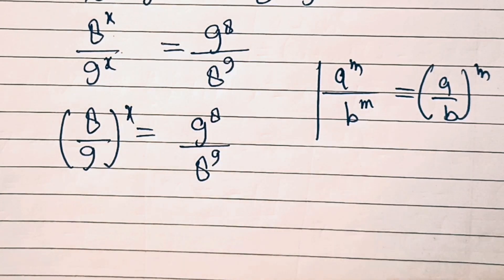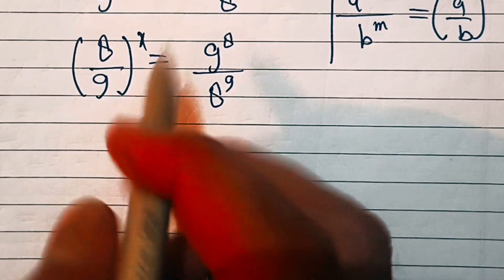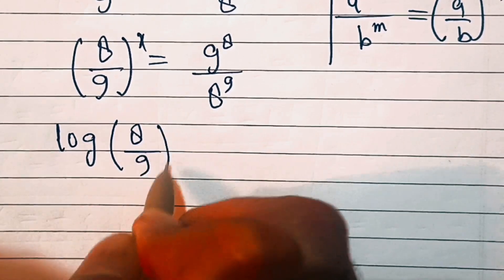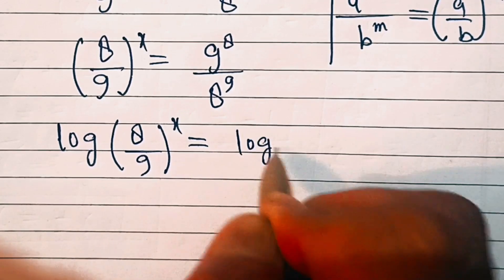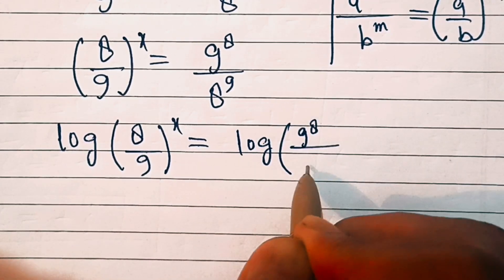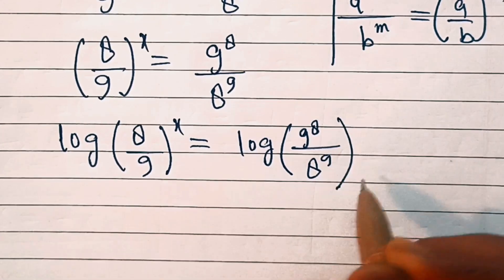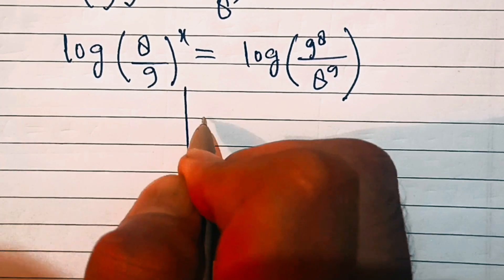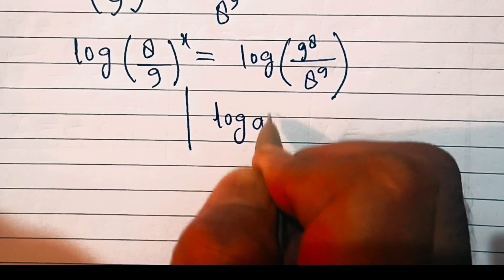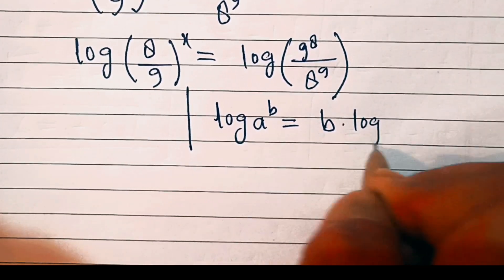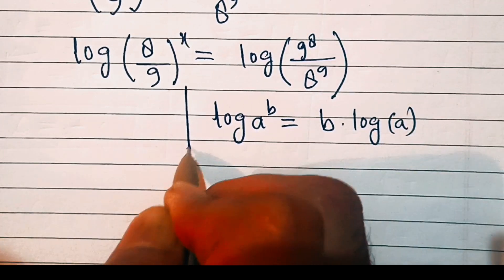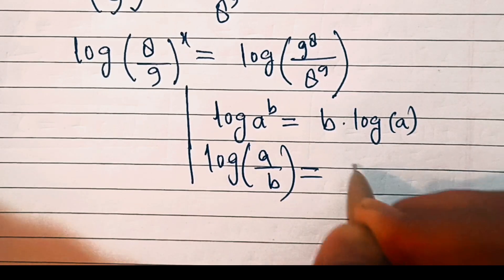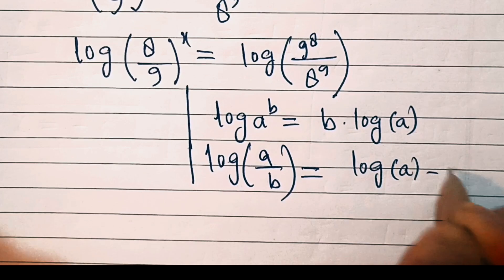Now we'll apply log on both sides. So this will look like log of (8/9) to the power x equals log of (9 power 8 over 8 power 9). Note that log of a power b is equal to b times log a, and log of (a over b) is equal to log a minus log b.